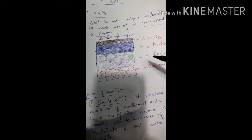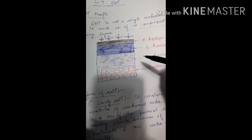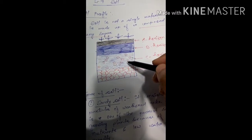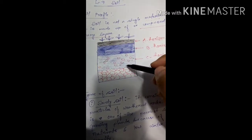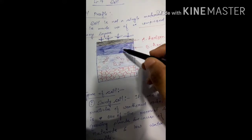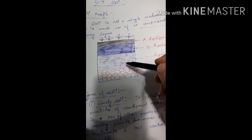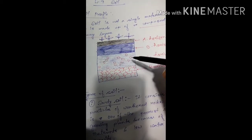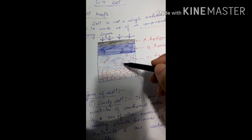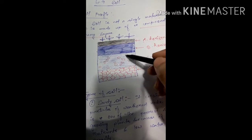In the third layer, C horizon, we find some gravels, stones, and rocks. Previously there were stones, but due to natural activity or pressure, those rocks got broken and converted into soils. So some remaining rocks are still there, and some have already been converted into soil.